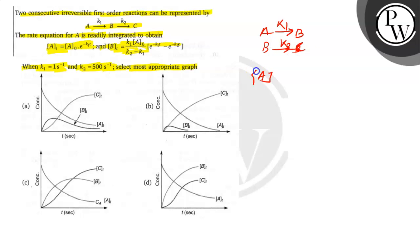[A]T is equal to [A]0 times e to the power minus K1T, and [B]T is equal to